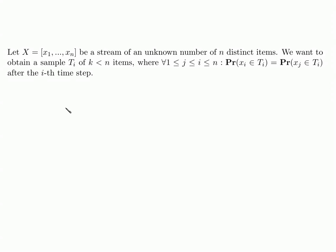Hello. Today we will prove one of the most important properties of the reservoir sampling algorithm. Let's say we have a stream of n items and we want to obtain a sample of the stream. The sample size is k but the size of the stream is n. We want that at any given time step of the stream, any item in the sample has the same probability of being there.